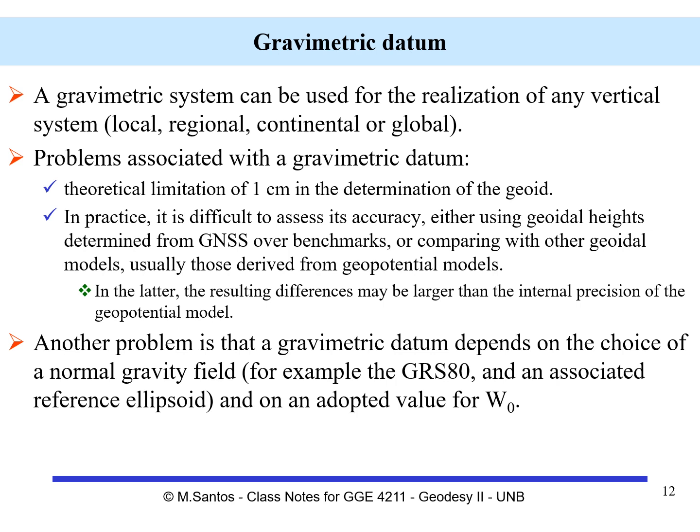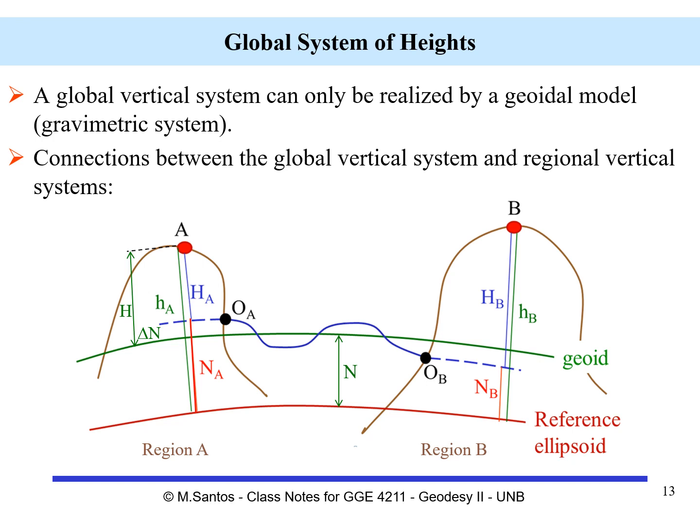The problem is that in the comparison between geoidal models, results may show larger differences than the internal precision of the geopotential model itself. Another problem is that the gravimetric datum depends on the choice of a normal gravity field — for example, GRS-80 and the associated reference ellipsoid — and also depends on an adopted value for W0, the potential on the geoid.